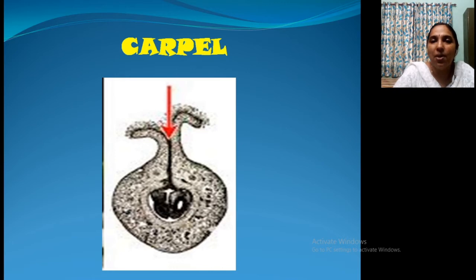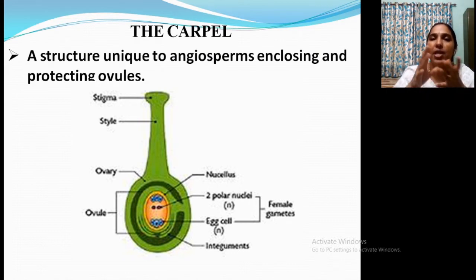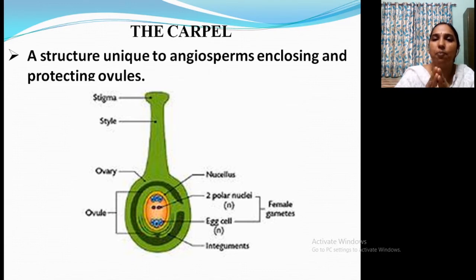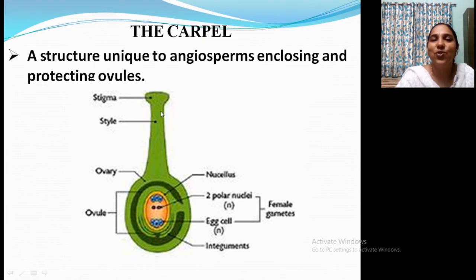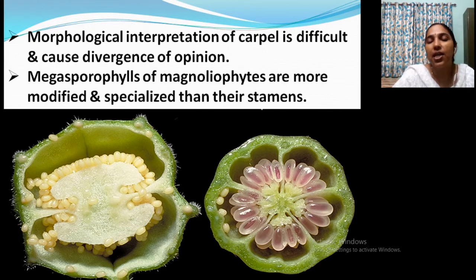Carpel is a very important part and it is a structure unique to angiosperms, enclosing and protecting ovules. That is why the term angiosperm — angio means enclosed, sperma means the seeds. So the seed is enclosed in the structure that is the carpel. This picture is very familiar. It has stigma, style, ovary, and ovules with embryos arranged inside. How this structure evolved from the primitive system is what we are going to discuss — a morphological interpretation given by various taxonomists from an evolutionary point of view.